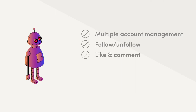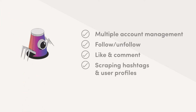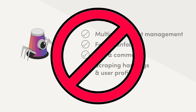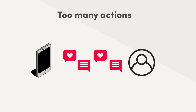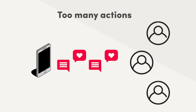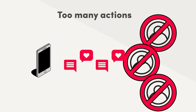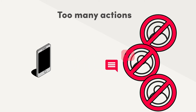Similarly, by using scrapers, you can scrape valuable data from Instagram, such as hashtags or user profiles. Unfortunately, Instagram is very strict about bots and scrapers. If it notices that you've made too many actions at once, or that suspiciously many accounts are working from the same IP address — let's say your phone — then it simply blocks your account, or temporarily forbids you from liking and commenting. This way, Instagram fights spam.